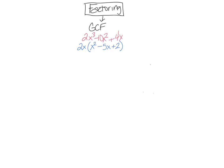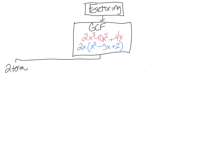That's the first thing you look for — the GCF. Once you've factored out a GCF, you look at how many terms there are. You might end up with two terms. If you have two terms, the special thing you might be looking for is it being a difference of squares. If it's not a difference of squares, then you're pretty much done — either you pulled out your GCF and you're done, or it's non-factorable.